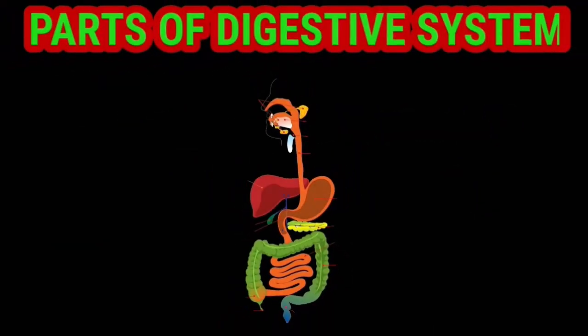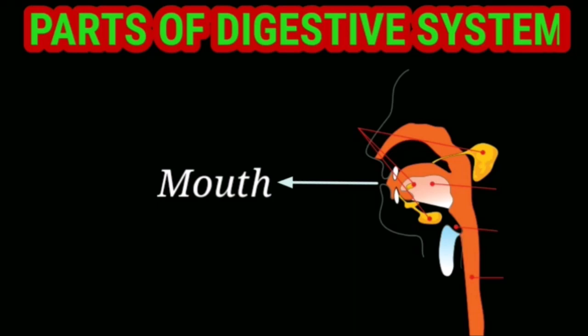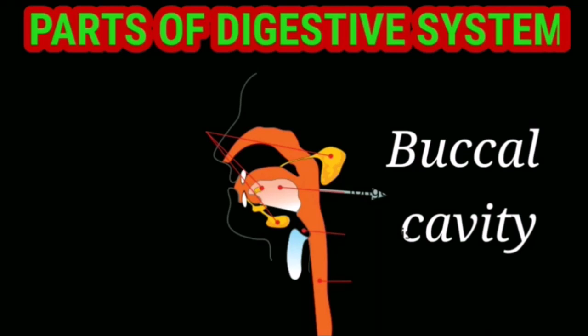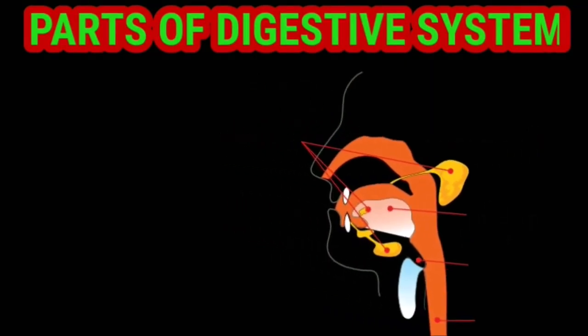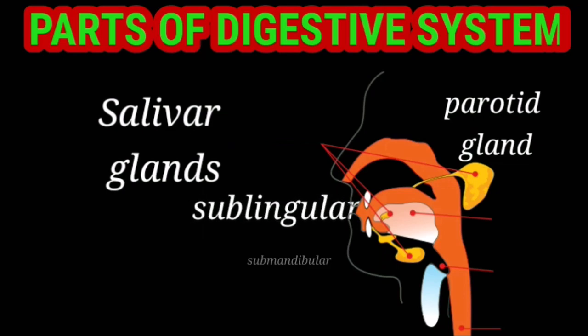Let us know the different parts of the digestive system. First of all, the alimentary canal starts with the mouth, through which we take food into our body. The mouth leads to an oral cavity or buccal cavity, which contains a muscular tongue, teeth, and the salivary glands. There are three types of salivary glands: the parotid gland, sublingual, and submandibular glands.